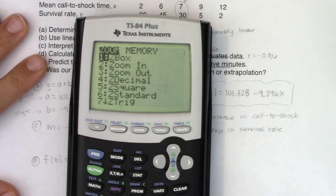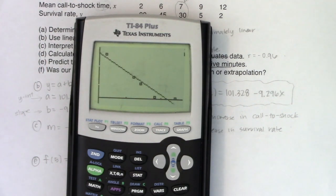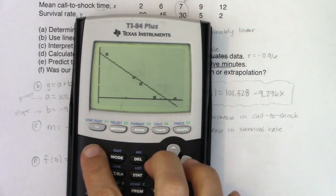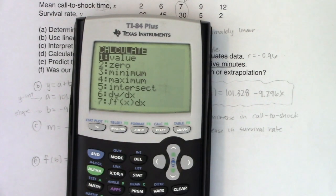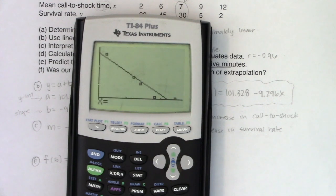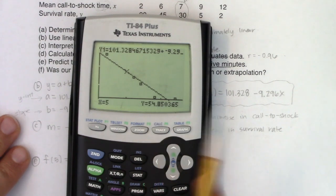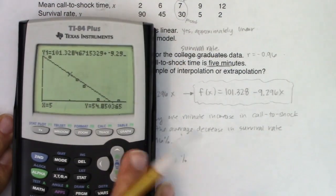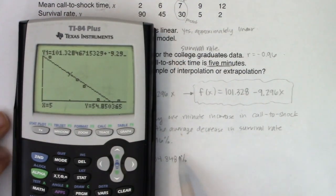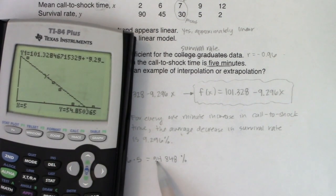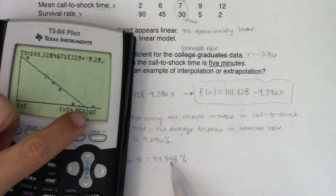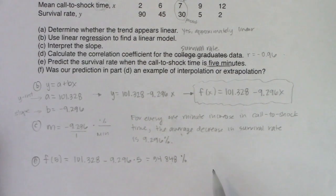If I hit zoom nine, I could have done this from my graph screen. So let's go ahead and try that. Now I'll do second trace to get my calculation screen up. Option one, I'm plugging in five and we get 54.850. What did we have? That's pretty darn close to what I got. So when I did it using my calculation screen, we got 54.848. This is 850. So that's off by a very small number. Either of these answers are acceptable.